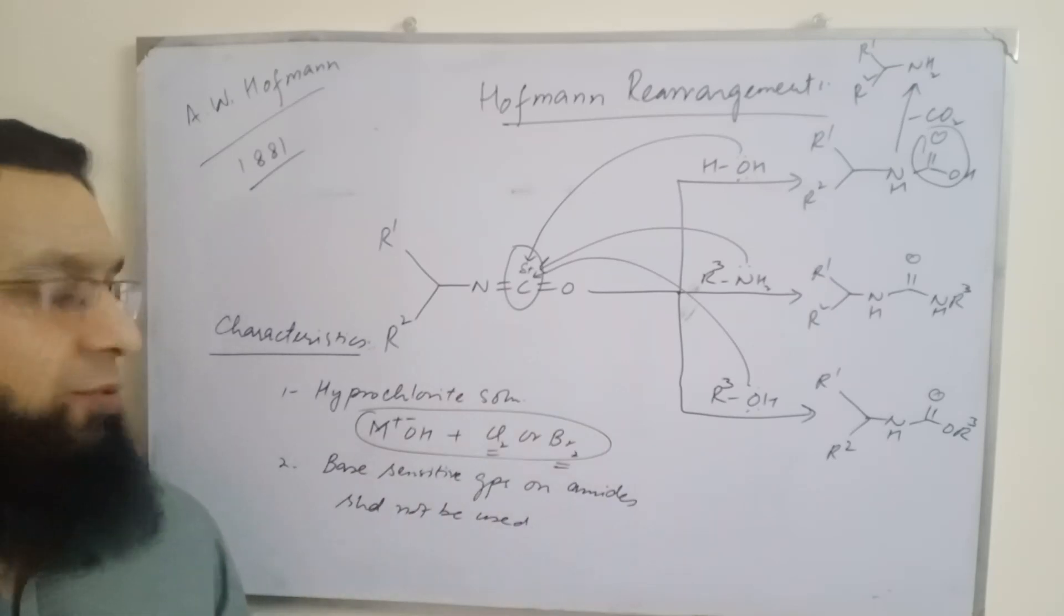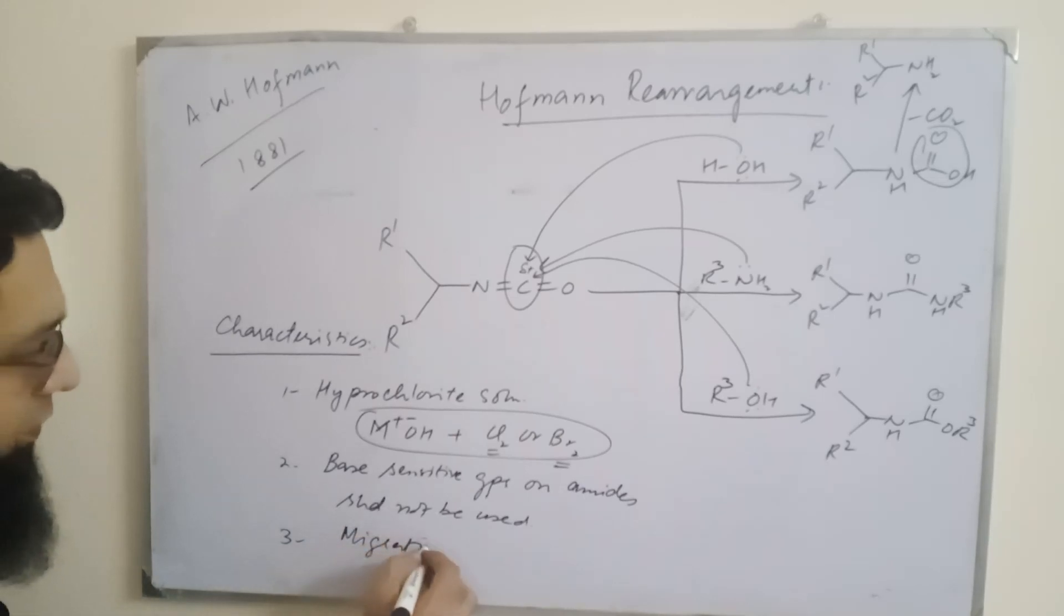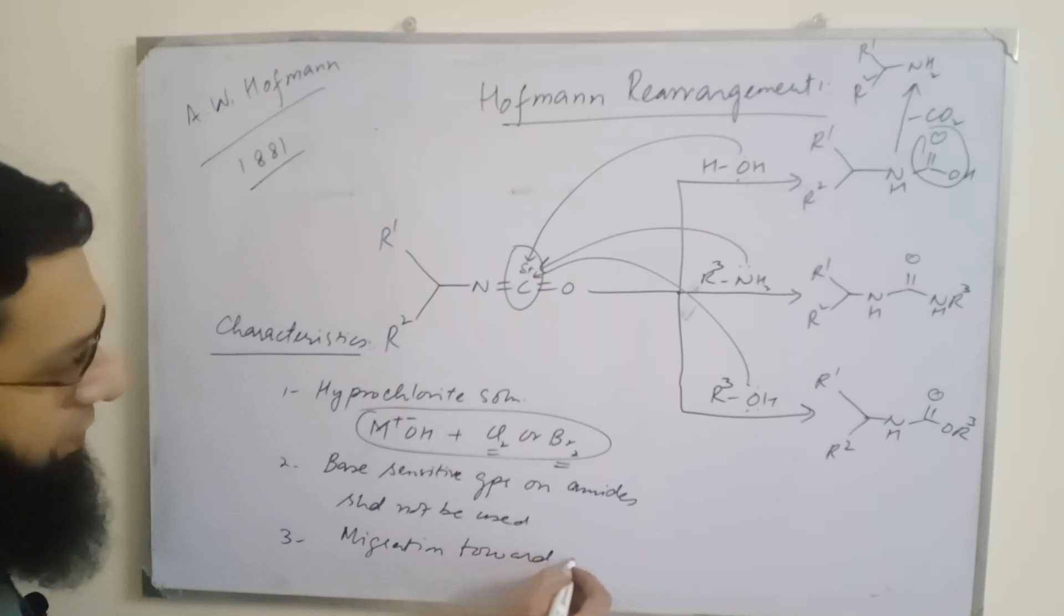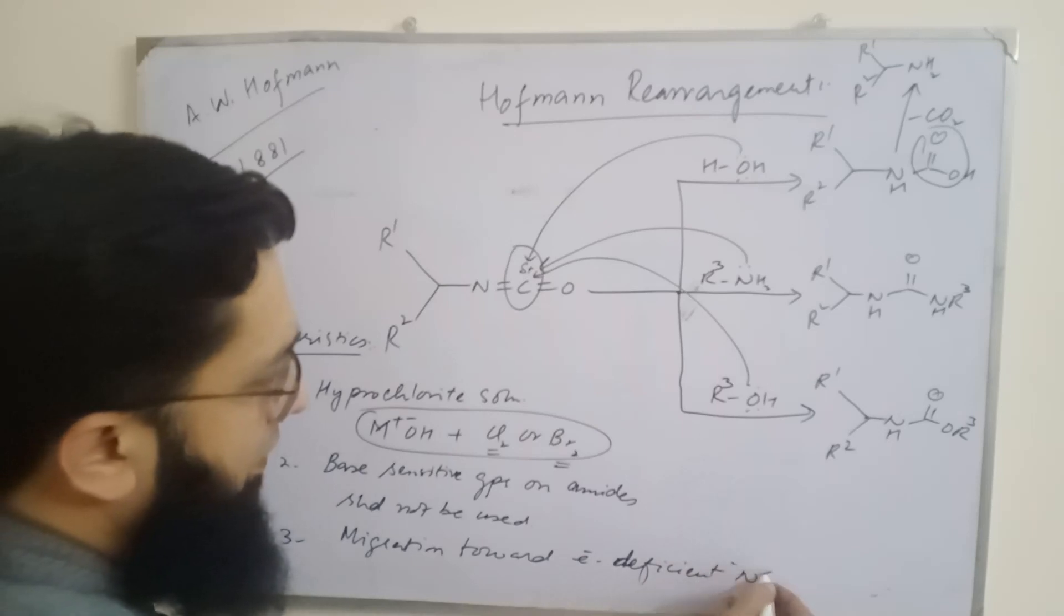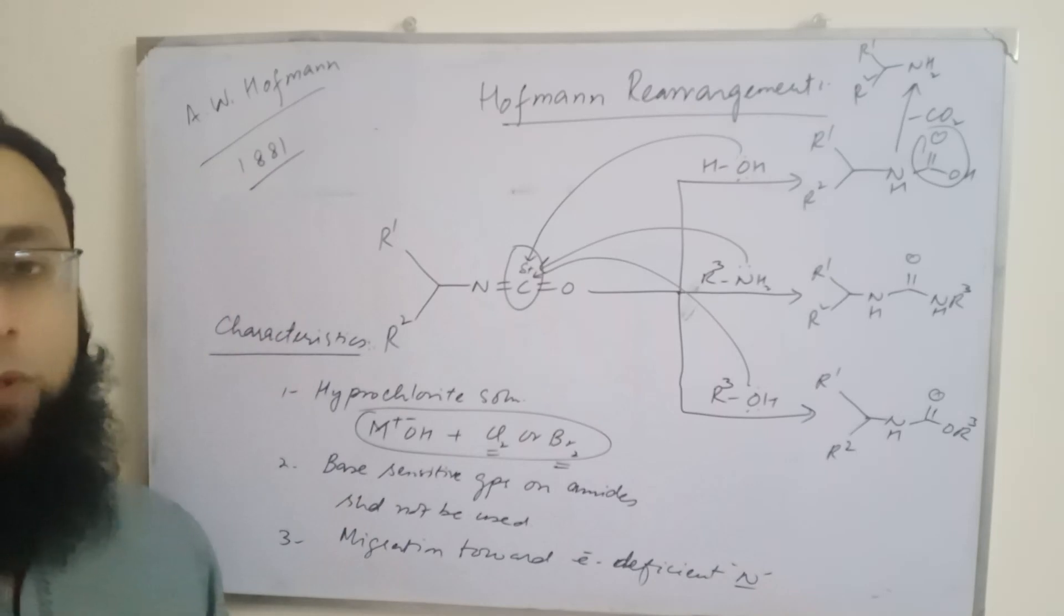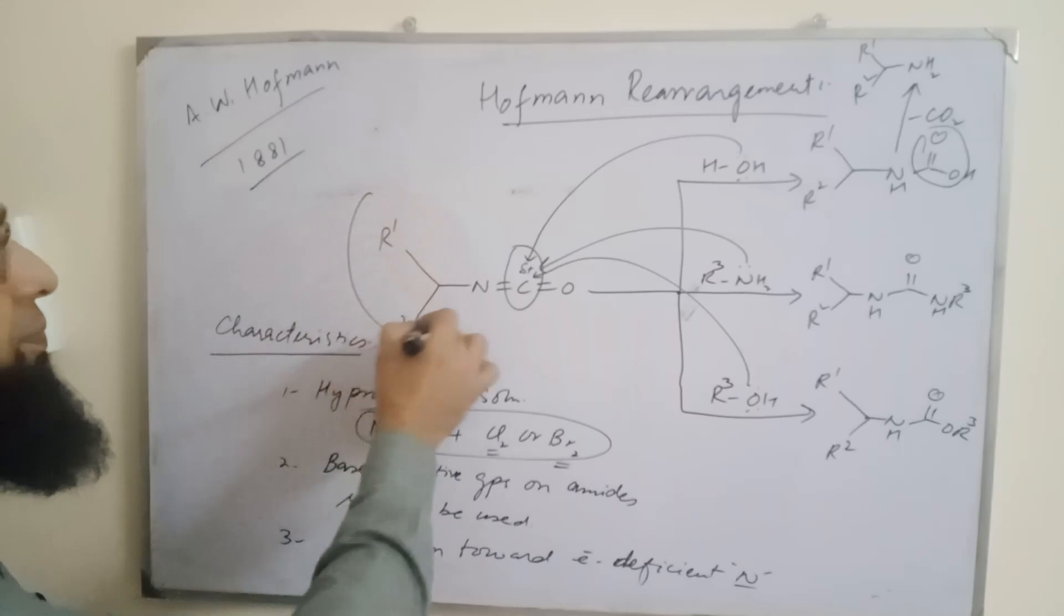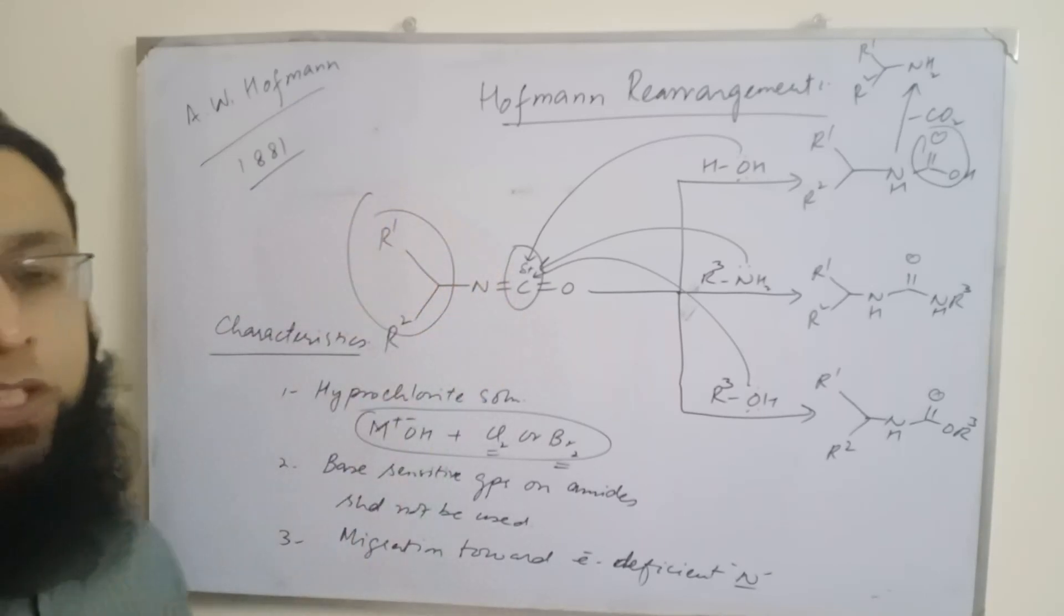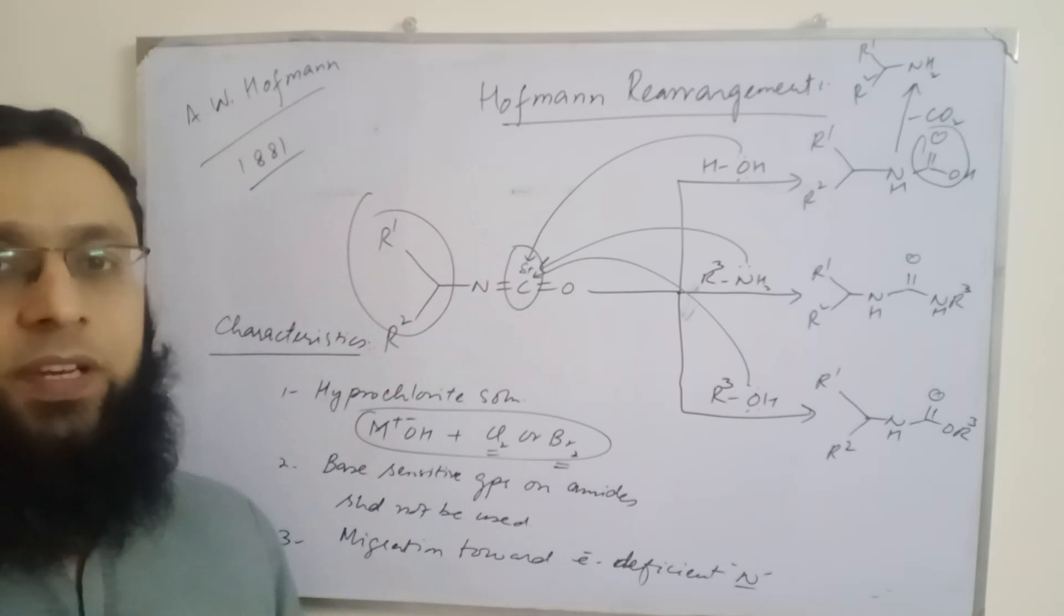Next point is this rearrangement also involves migration towards electron-deficient nitrogen, as we have seen during the rearrangement step, which is also the rate-determining step. In this rearrangement, if the starting amide is enantiopure (meaning only one type of stereoisomer is present), retention of configuration takes place, and as a result we will get enantiopure products as well.